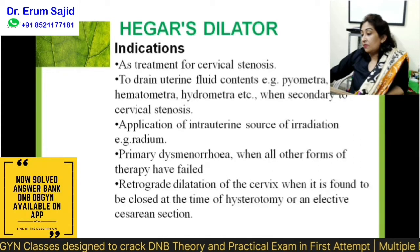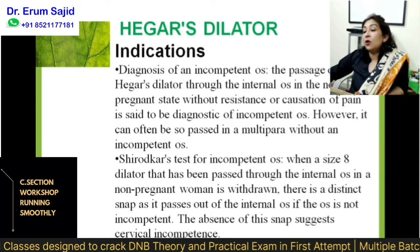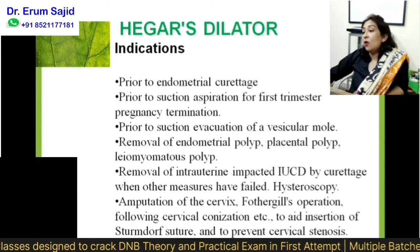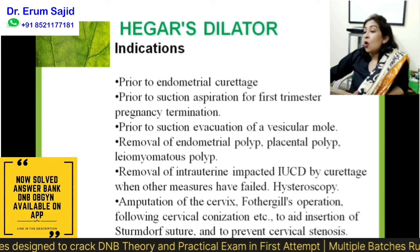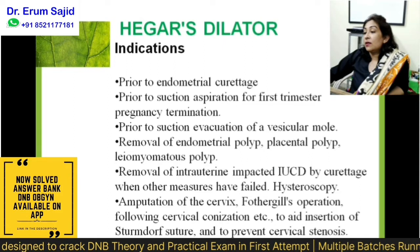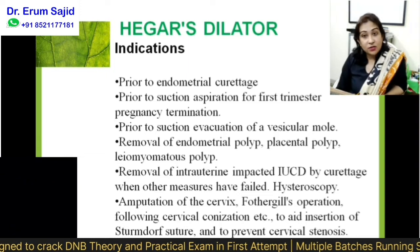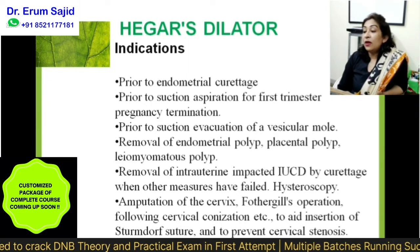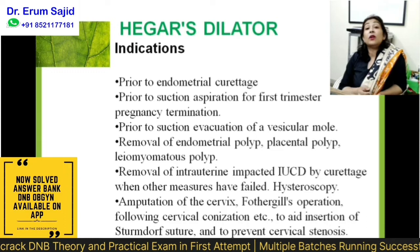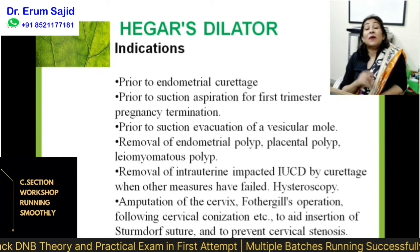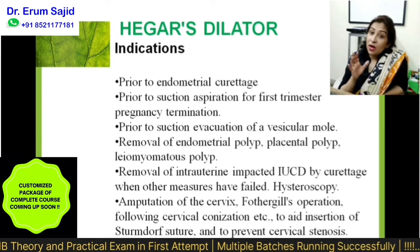As far as obstetric conditions are concerned, incompetent os will be discussed later. Now for gynaecological indications: number one — endometrial curettage. Number two — endometrial polyp removal, placental polyp removal, leiomyomatous polyp removal. Even before hysteroscopy you sometimes need to dilate, especially for operative hysteroscopy. To remove an IUCD by curettage when other measures have failed — a stuck IUCD is difficult, so you need to first dilate.